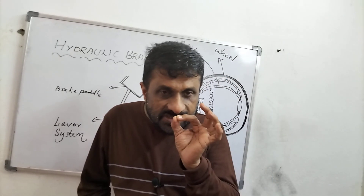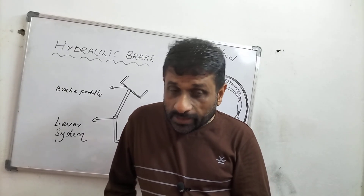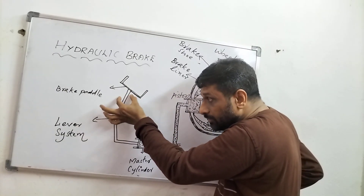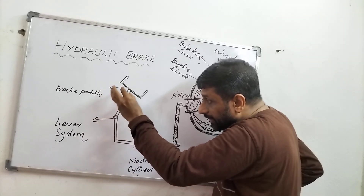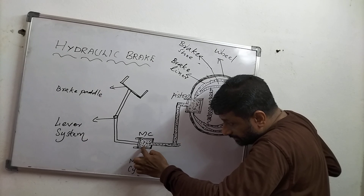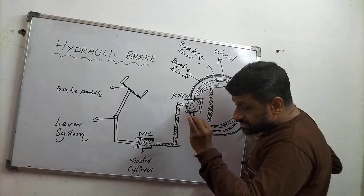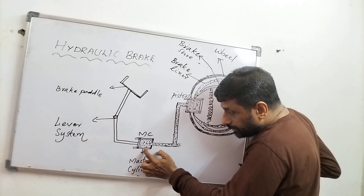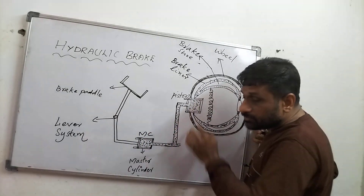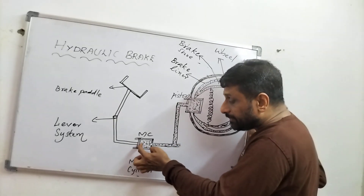The principle of the hydraulic brake is the same as that of the hydraulic lift. When the driver of the vehicle puts pressure on the brake pedal, the lever system moves the piston into the master cylinder. The master cylinder contains the brake fluid, which then flows from the master cylinder to the piston, transmitting pressure equally in all directions.